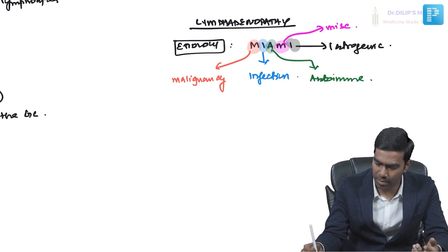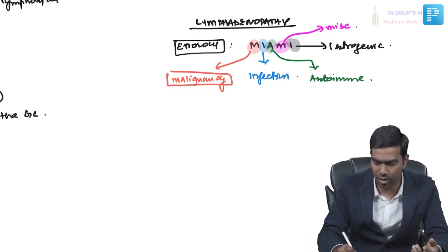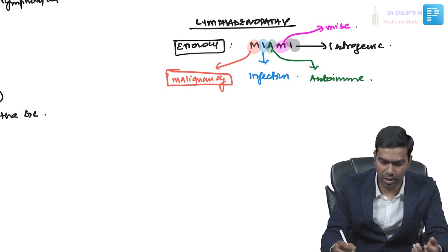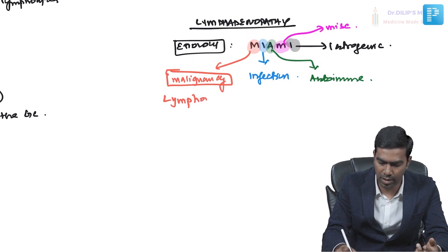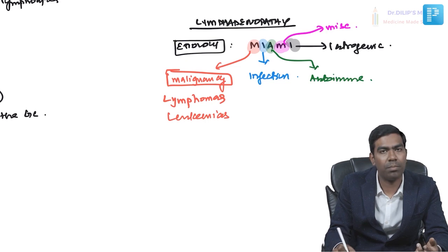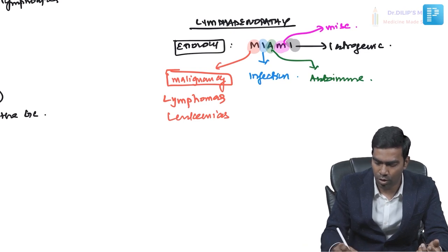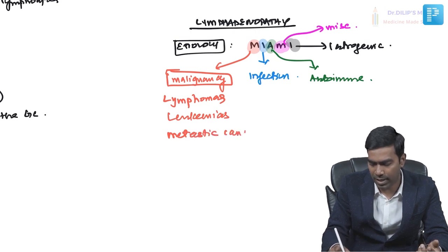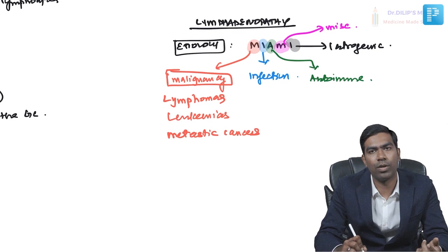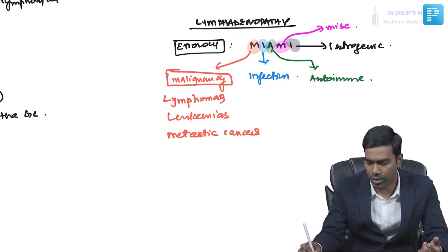When we talk about malignancy, it is a very important reason for lymphadenopathy. Many malignancies can cause lymphadenopathy — for example, lymphomas, and there are a lot of lymphomas. Leukemias can also cause lymphadenopathy, though it is generally rare but possible. Then you have metastatic carcinomas. So these three — lymphomas, leukemias, and metastatic cancers — are the main malignancies producing lymphadenopathy.